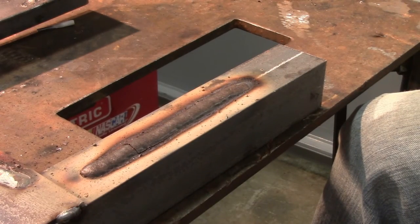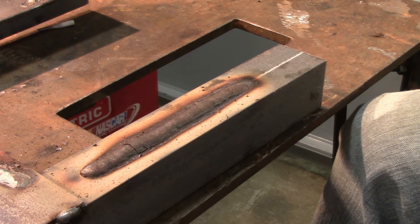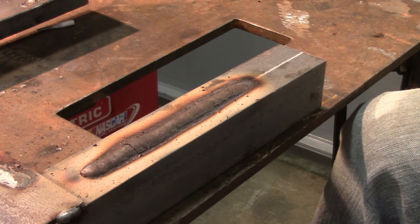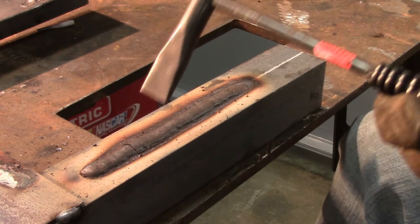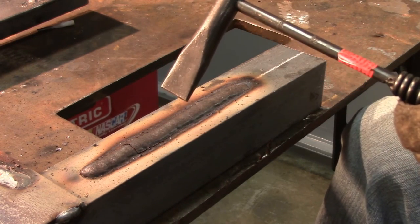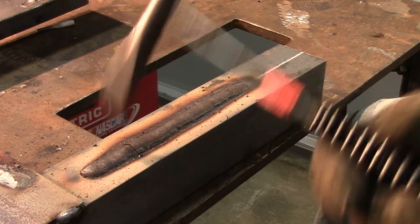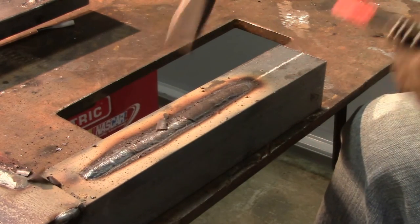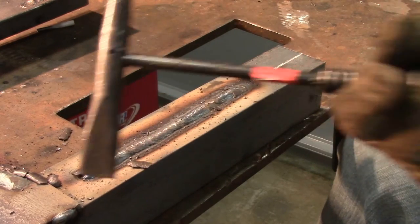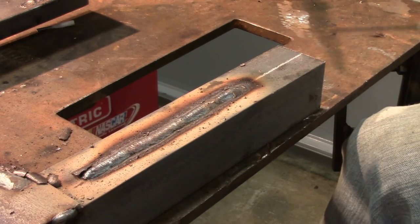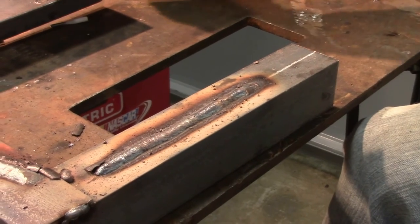This is our 7018 pass right here and you can see that's what it looks like before you chip it. Now when you chip this slag, the stuff flies everywhere, make sure you have eye protection on. We'll chip it here real quick. It's a lot thicker than the 6010 you'll see. See how the bead is a lot more smooth than the 6010?